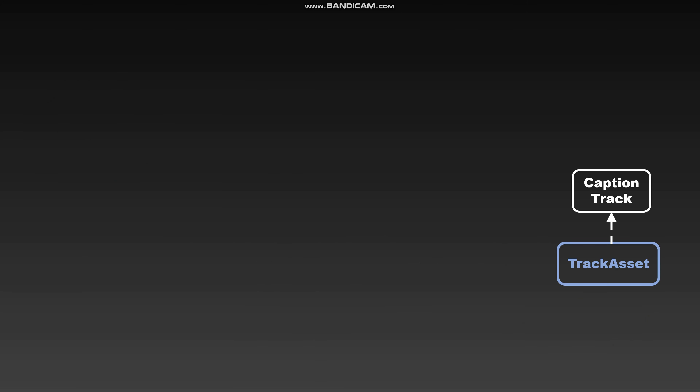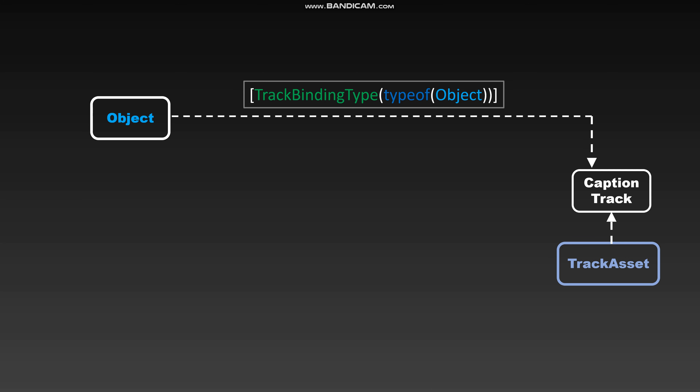The first class we'll create will be called CaptionTrack, and this will derive from Unity's TrackAsset class. What we'd like to do is take our object and tell Timeline that we'd like CaptionTrack to update the properties of that object over time. In order to do that, we'll use the attribute called TrackBindingType. By saying TrackBindingType of type object, we're telling Timeline that we would like to take CaptionTrack and update that object over time.